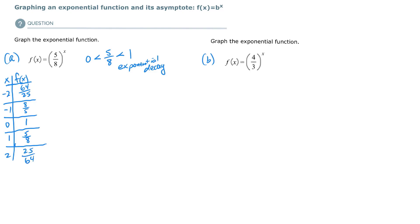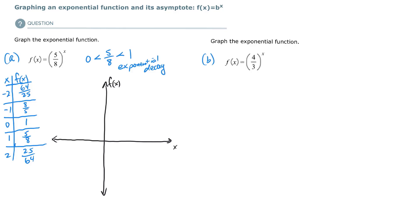We're ready to graph this. If you have graph paper, that'll be easier. If not, do your best to draw your own. At negative 2, we get about 2 and 14/25ths, so about 2 and a half. Negative 2, we get close to 2 and a half, so right about here. There's an ordered pair.